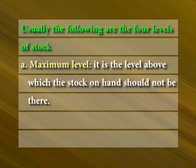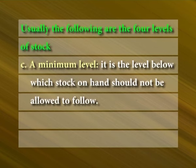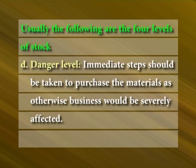Maximum level: the level above which the stock on hand should not be. Ordering level: at this level the concerned person should take steps for getting a fresh supply. Minimum level: the level below which stock on hand should not be allowed to fall. Danger level: immediate steps should be taken to purchase the materials, as otherwise business would be severely affected.